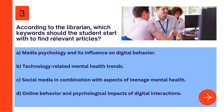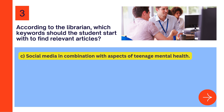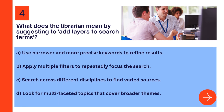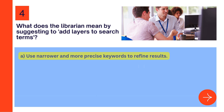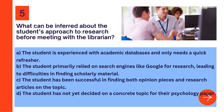Question 3: According to the librarian, which keywords should the student start with to find relevant articles? Question 4: What does the librarian mean by suggesting to add layers to search terms? Question 5: What can be inferred about the student's approach to research before meeting with the librarian?